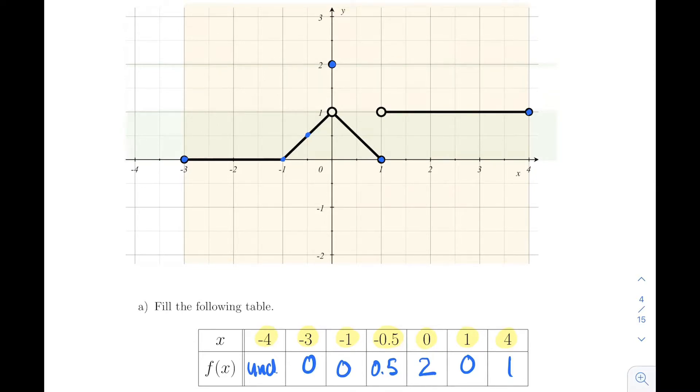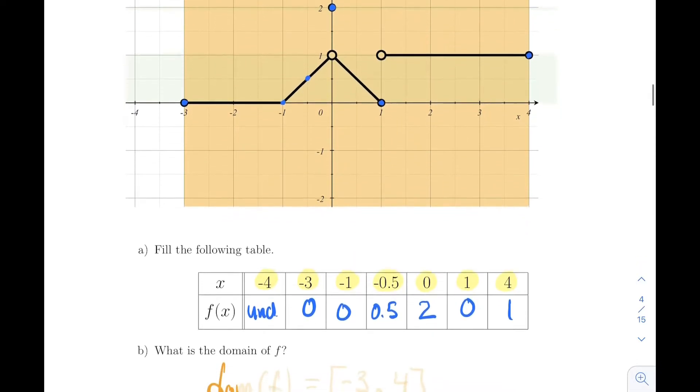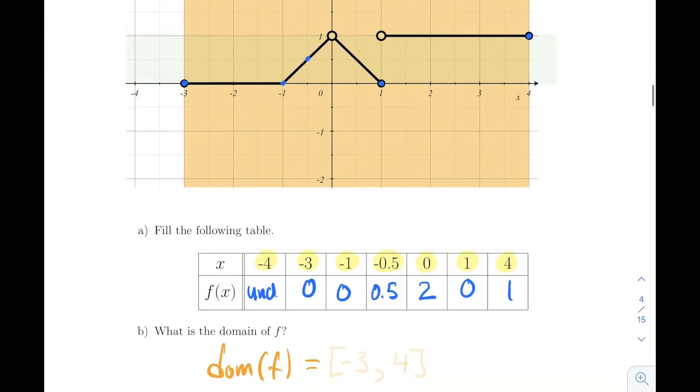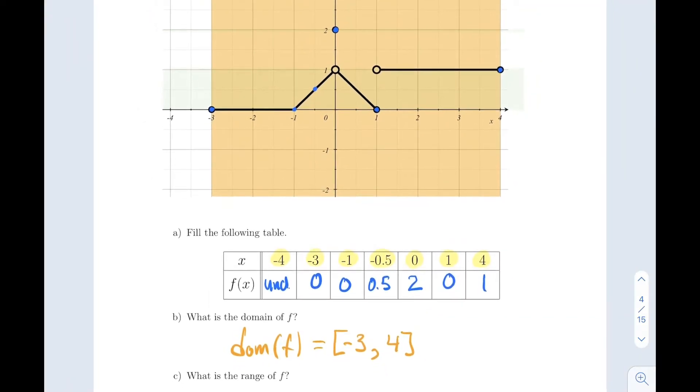What is the domain? You can see the graph is starting at minus 3 and ends at 4. So the domain of f is [-3, 4]. It includes minus 3 and goes all the way up to 4, including it. That's the domain for my function.